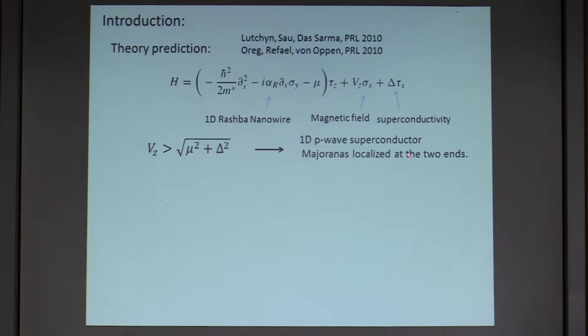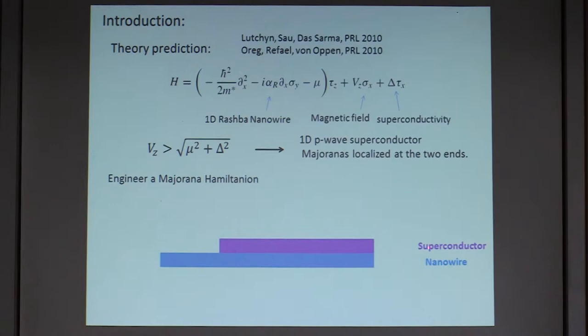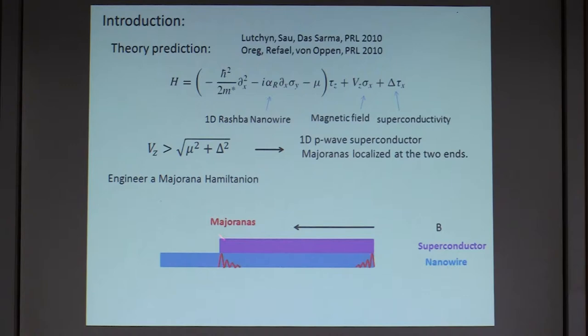Experimentally, we want to engineer such a Hamiltonian. We start with a nanowire that has strong spin-orbit coupling — for our case it's the indium-antimonide nanowire. Then we add a superconductor on top of the nanowire to make it superconducting, and we apply a magnetic field to create the Zeeman term. Now we have all the ingredients needed to create this Hamiltonian, and as long as the magnetic field or Zeeman energy is larger than the critical value, you can create two Majoranas at the ends of the superconductor.